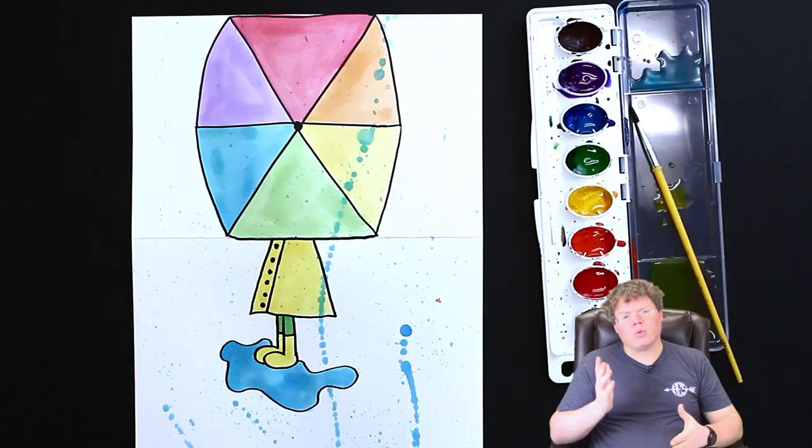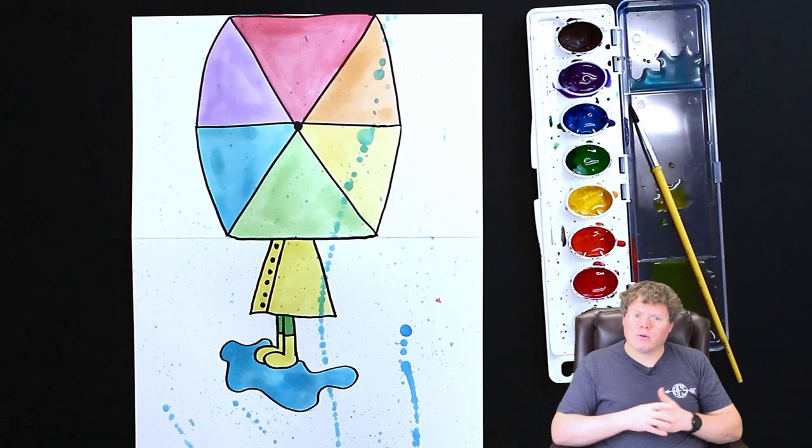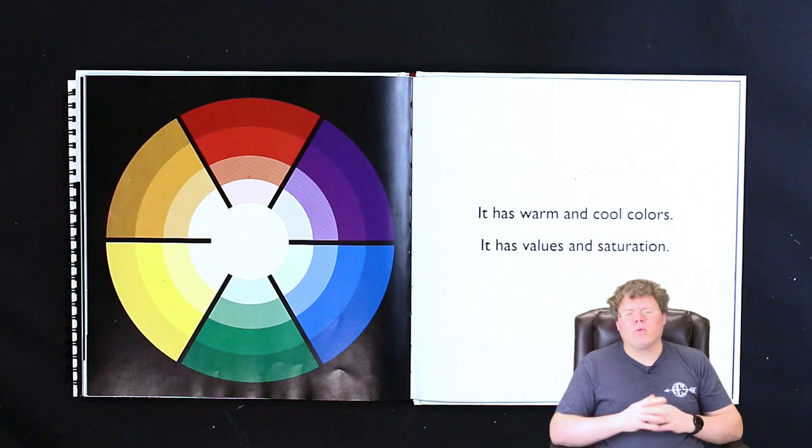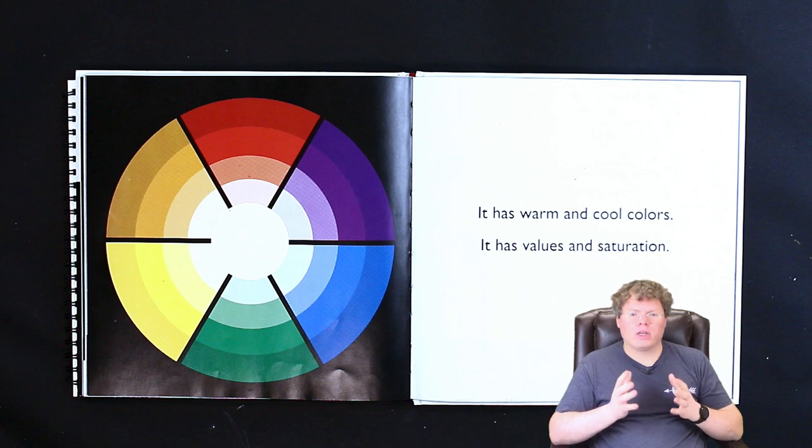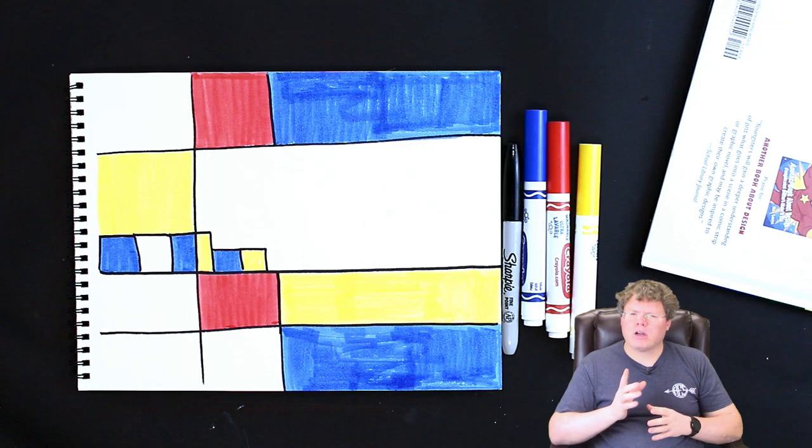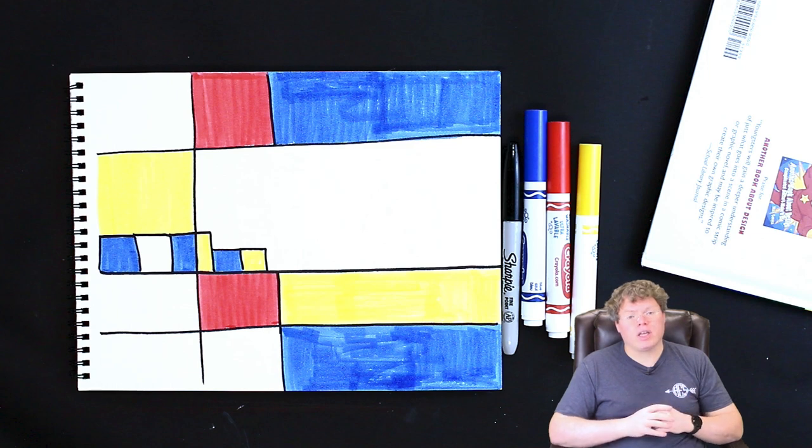Welcome to Mr. New's art class. It's wonderful to see your smiling faces. Over the last couple of lessons, we have been talking about the color wheel. Today, we're going to take a look at how that color wheel is made, and we're going to talk about primary and secondary colors that we can find on that wheel.